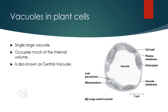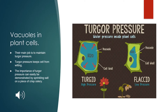Vacuoles also play a very important role in plant cells. There is a single vacuole, but very large compared to other organelles. In plant cells, it occupies much of the internal volume of the cell and is widely known as the central vacuole. The main function of the vacuole in plant cells is to maintain turgor pressure, which is what keeps the plant cell from wilting.